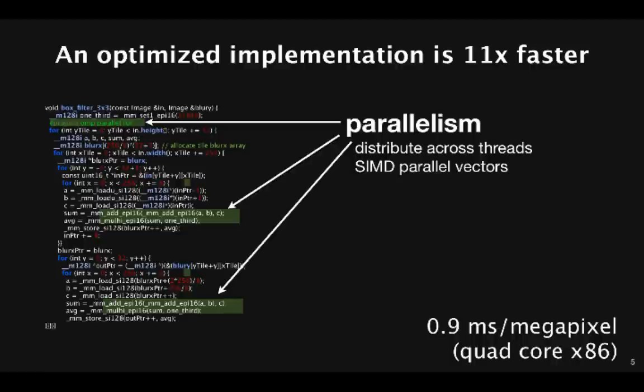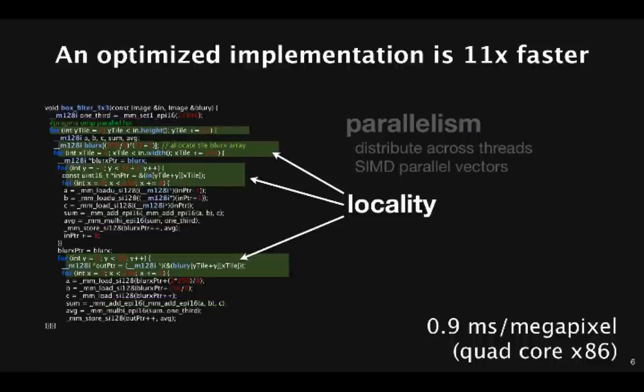Exposing parallelism though is only half the story. Just as important, and often much harder to think about or express, is locality. For example, making sure the pixels produced by one stage are still in cache when the next stage reads them. And without locality optimization, even a really well parallelized pipeline will probably be limited by the available memory bandwidth.